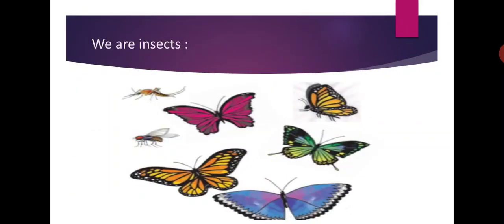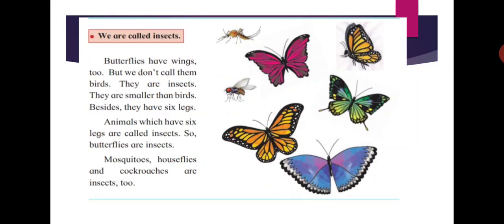So, we are insects. Butterflies have wings too, and we might think that animals having wings are birds. But we call butterflies insects because they are smaller than birds and they have six legs. Animals which have six legs are called insects, so butterflies are not birds — they are insects. Mosquitoes, house flies, and cockroaches are insects too.